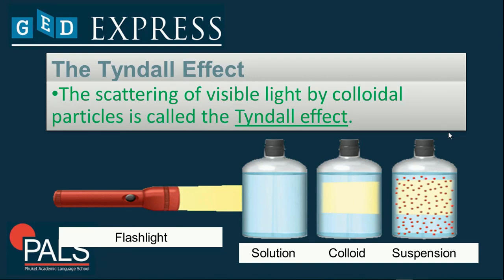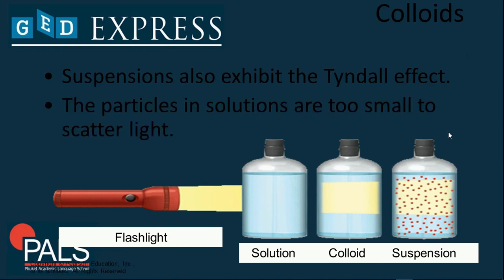A solution does not allow light to scatter visibly, but colloids allow light to pass through and scatter. For suspension, the particles can be seen when exposed to light. The scattering of visible light by colloidal particles is called the Tyndall effect. Suspensions also exhibit the Tyndall effect, while particles in solutions are too small to scatter light — that is why no scattering is visible in the solution container, unlike with colloids and suspensions.